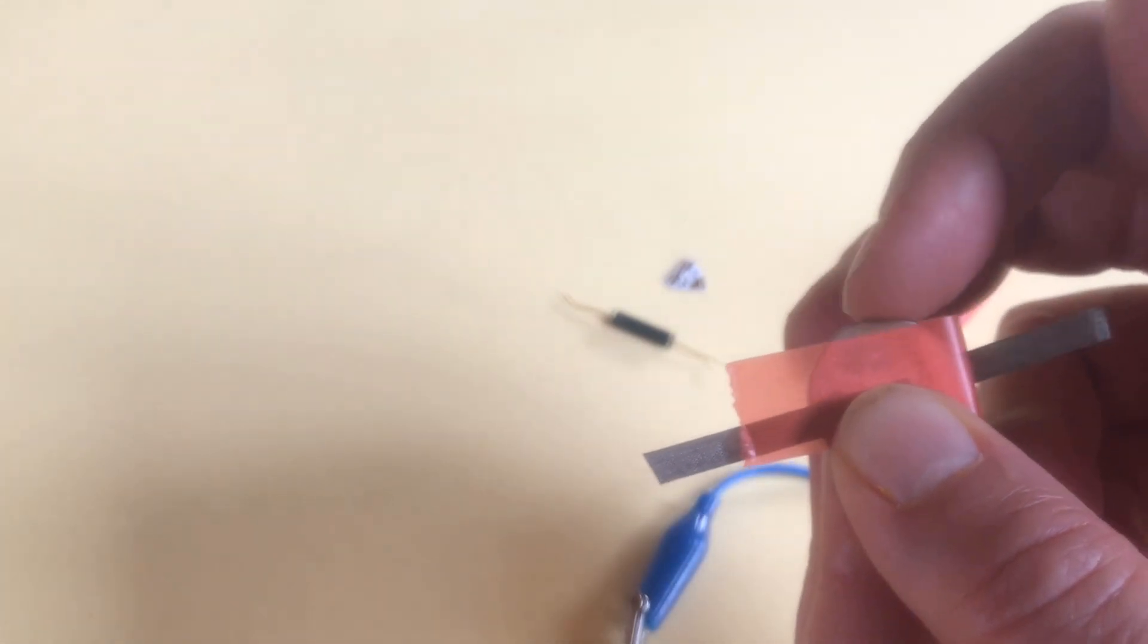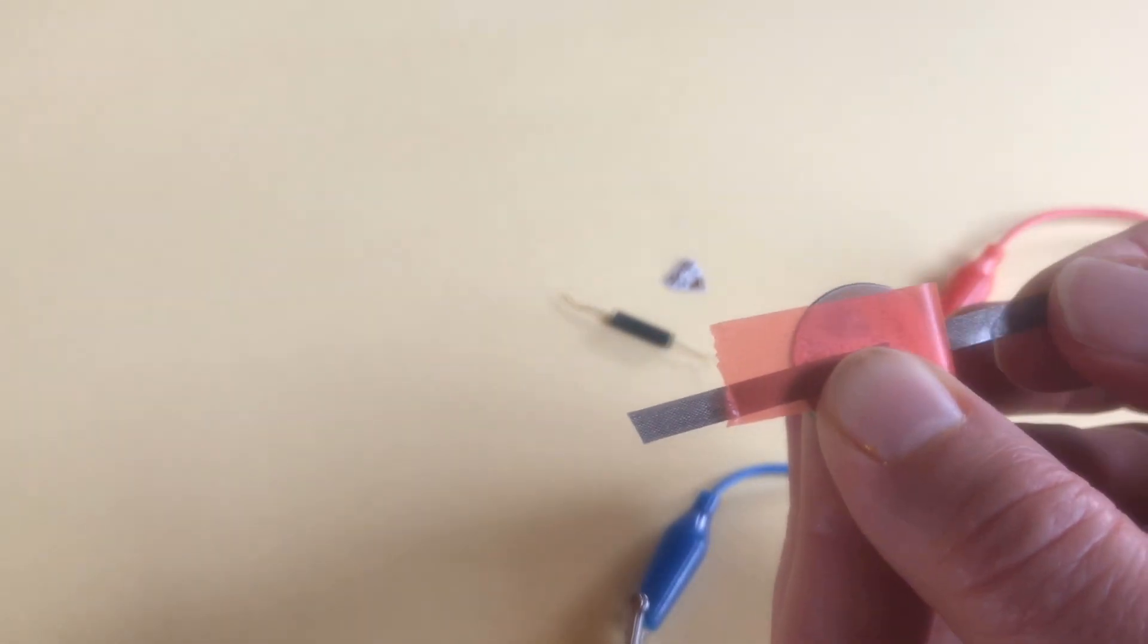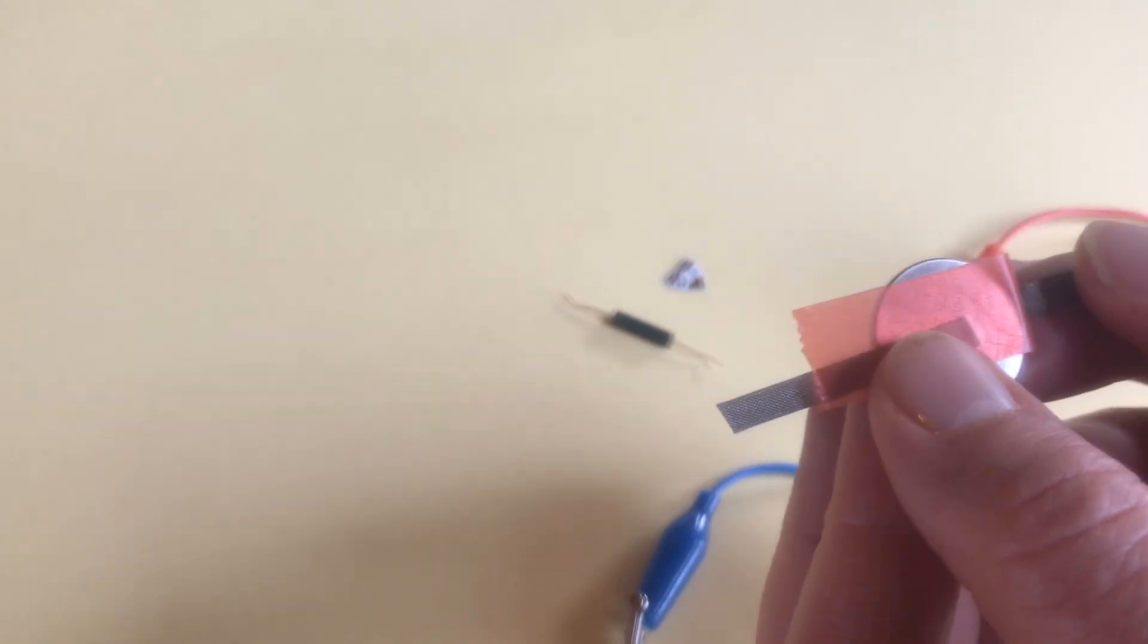So I have a piece of negative circuit tape touching the negative side of the battery and a piece of positive circuit tape touching the positive side of the battery.